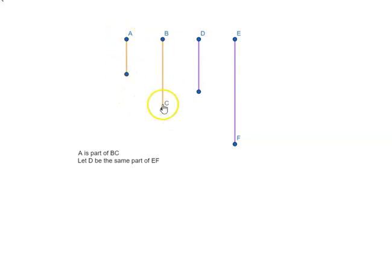So here BC has two parts equal to A and EF has two parts equal to D. Now BC is equal to n times A. Because remember, here we are taken twice but it could be any number.